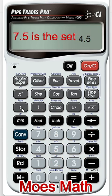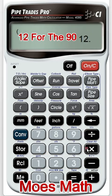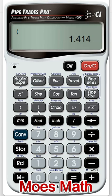We're going to divide by parentheses. 12 for the 90 times 1.414. Close it out with parentheses. Press equals.